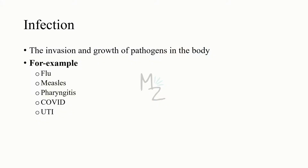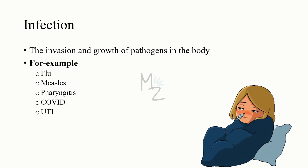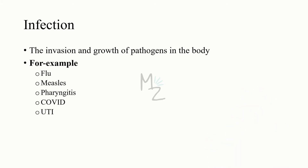Before talking about the stages of infection in detail, we should know what is an infection. It is the invasion and growth of pathogens — microorganisms or germs — in the human body. For example, flu, which is caused by a virus, invades and increases its number in the human body. Other examples include measles, pharyngitis (which can be viral or bacterial), coronavirus disease, and UTI.